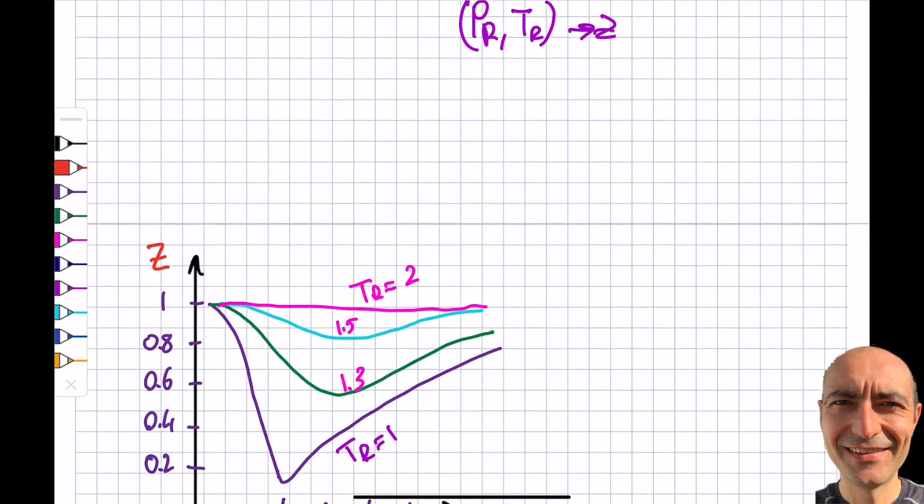I'm back. So let's look at this graph. First let's start with the x-axis, Pr, reduced pressure. And you can see over here the curves like Tr, Tr, Tr, different values. I have a Z value and this right here is one. This is supposed to touch here. This works for any gas.